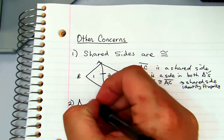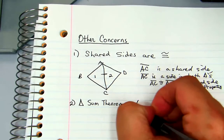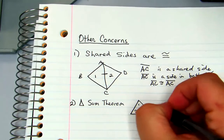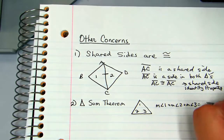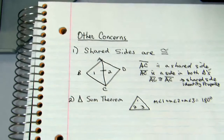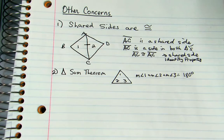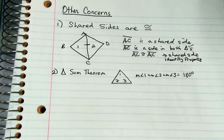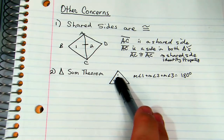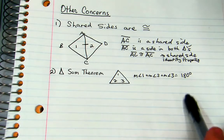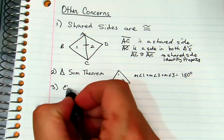Two, remember the triangle sum theorem. Measure of angle one plus the measure of angle two plus the measure of angle three is equal to 180 degrees. Remember that theorem. That's one that's going to help you out, especially when you're looking for missing angles but you need that angle to prove. Say you need an angle to prove side-angle-side, but you have the two other angles and you desperately need angle one. Well, you can actually do some algebra in order to solve that.